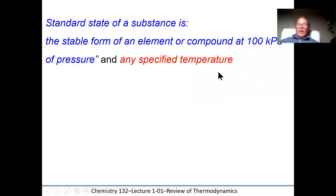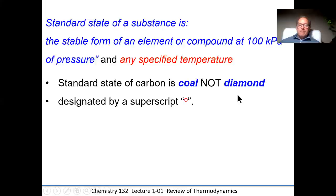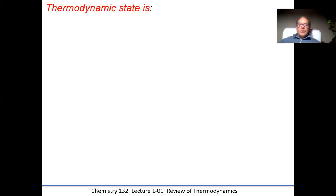The standard state of a substance, by definition, is the form that a substance takes at a pressure of 100 kilopascals, typically specified at 25 degrees Celsius. For example, the standard state of carbon at that pressure and temperature is not diamond, but coal. We designate a substance at standard state using a degree sign — so delta H° indicates that the enthalpy change was measured at 100 kilopascals, usually at 25 degrees Celsius.